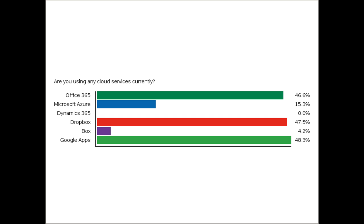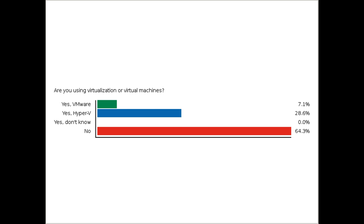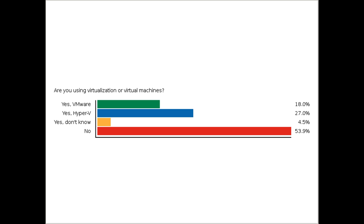It looks like about half of you are already using either Office 365, Dropbox, or Google Apps, or maybe a combination of all of those. This is really helpful to know who is already moving toward the cloud. Are you using virtualization or virtual machines? Maybe you are using VMware or Hyper-V, or maybe you use virtualization but are not sure what you are using. Or maybe your answer is just no, and that is okay too.